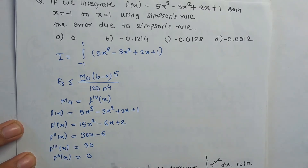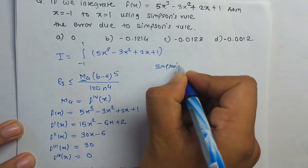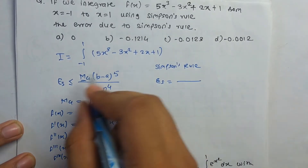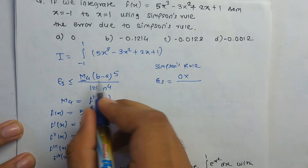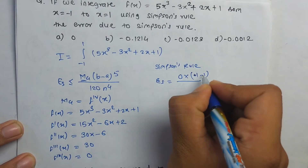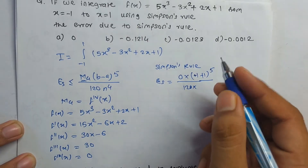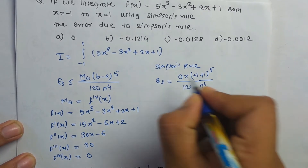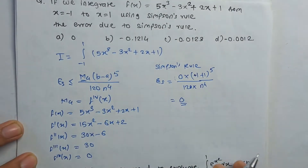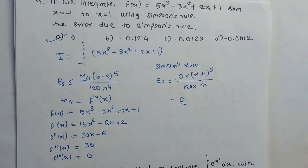Since M4 = 0, the error formula becomes: 0 × (b − a)⁵ / (180 × n⁴) = 0. So the error due to Simpson's rule is 0. The answer is option A. Now we will find the error for the trapezoidal rule in the next problem.